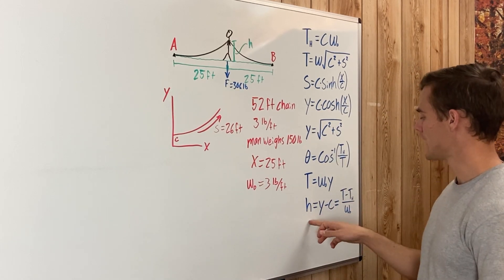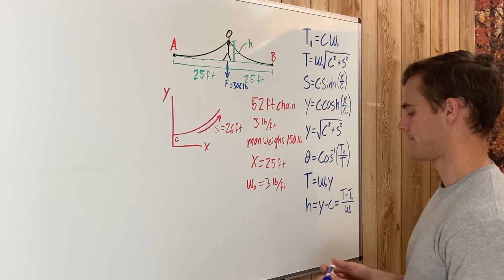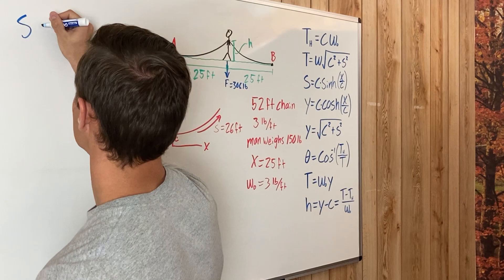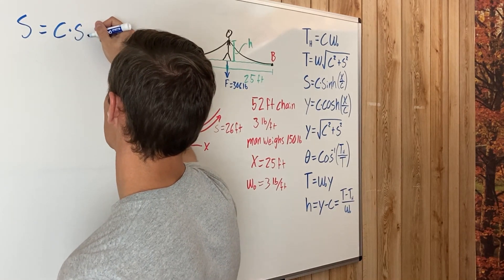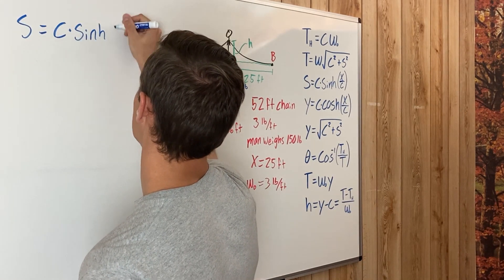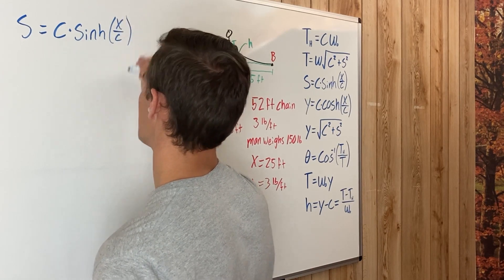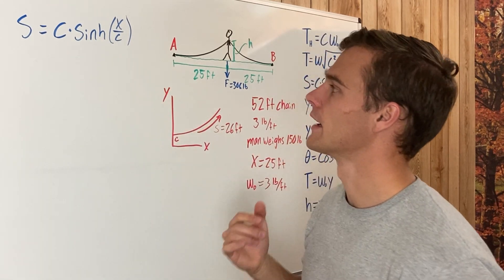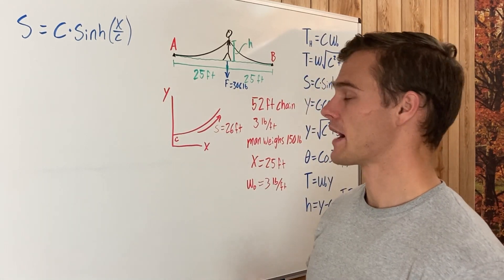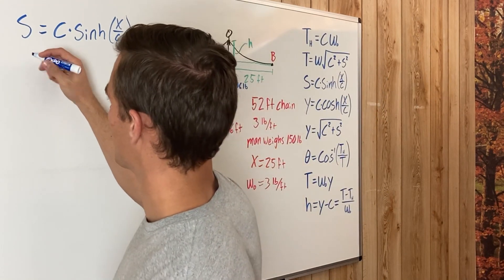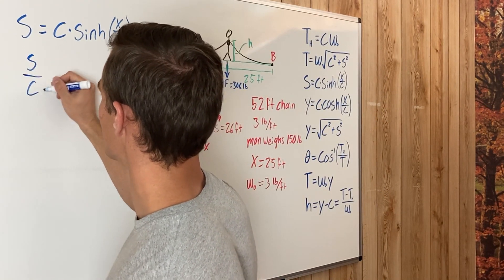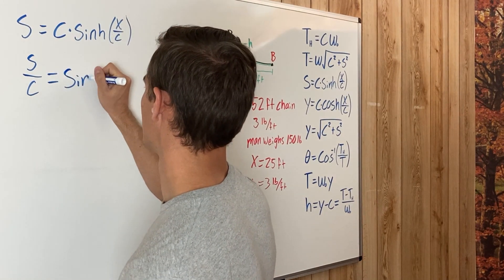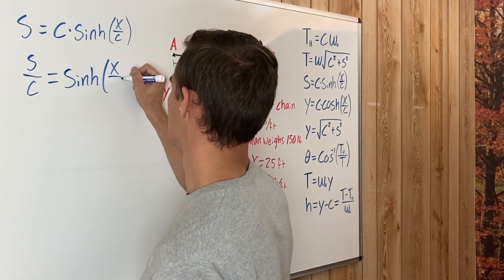So we'll use this equation that S equals C times the hyperbolic sine of x divided by C. Now this isn't an easy equation to solve because we can't just solve it for C and find out what it is. We have to use an iterative process where we multiply C over to the other side, and that equals the hyperbolic sine of x divided by C.